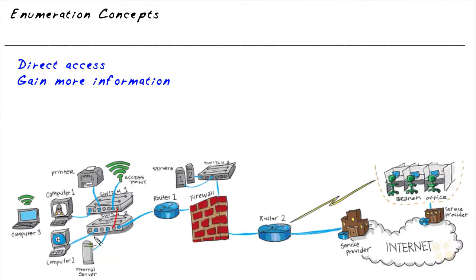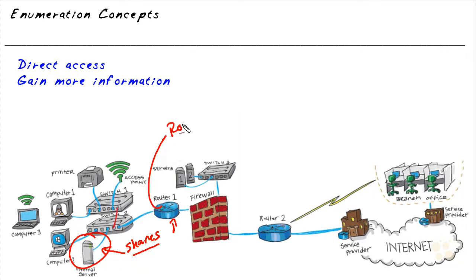On a system or server, we might want to determine what shares are involved — what folders or files are being shared off the different devices. From the router's perspective, what does the routing table look like? That could be another attack vector. If we put a rogue router in there and have all traffic go through it, we're performing a man-in-the-middle attack with better access to all the data going through that point in the network.